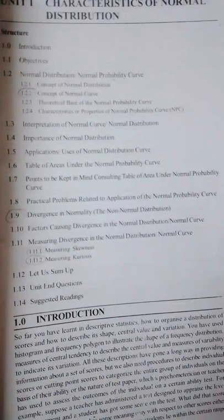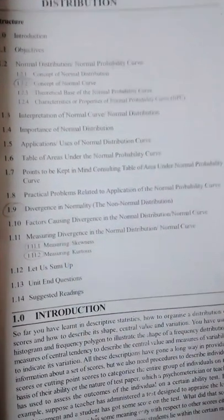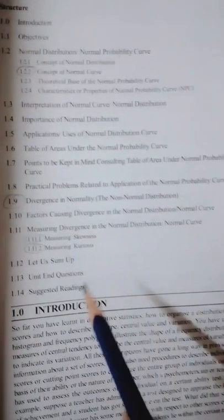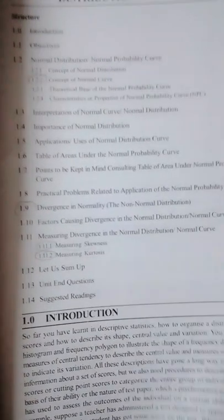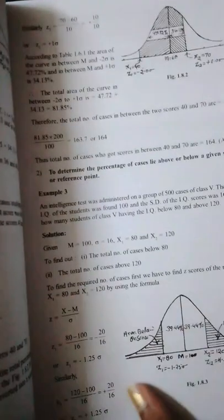Then from third block: concept of normal curve, really important. Then you can read this divergence in normality and these two - measuring skewness and kurtosis. Just read them once or twice nicely, try to understand what it means so you can write yourself in exam.